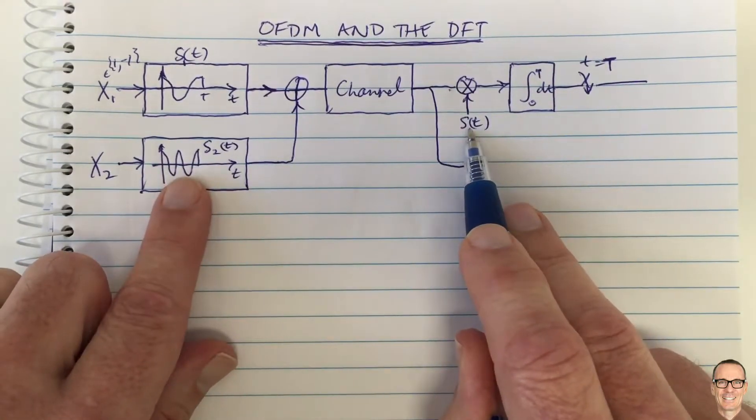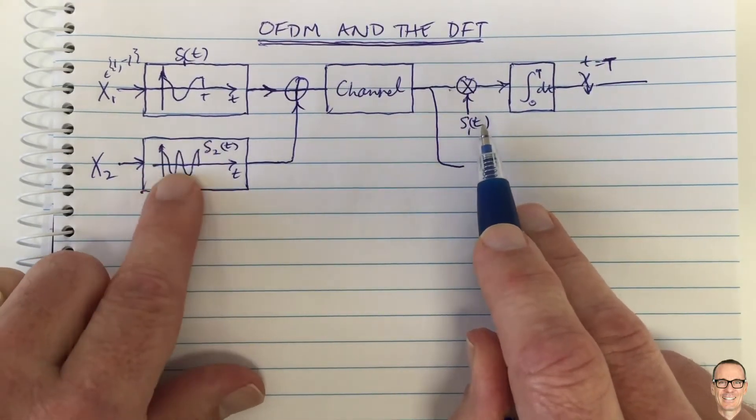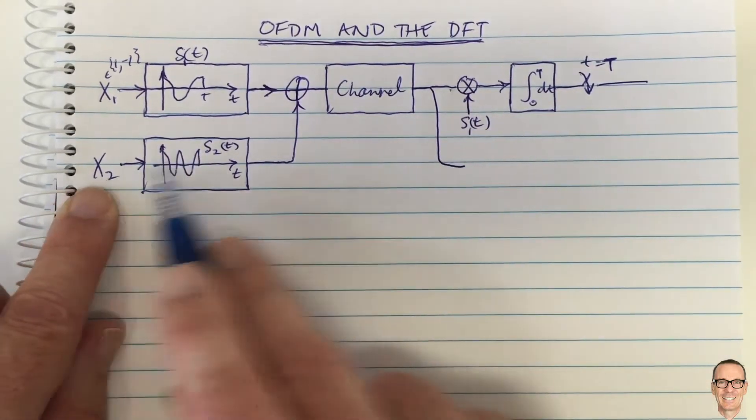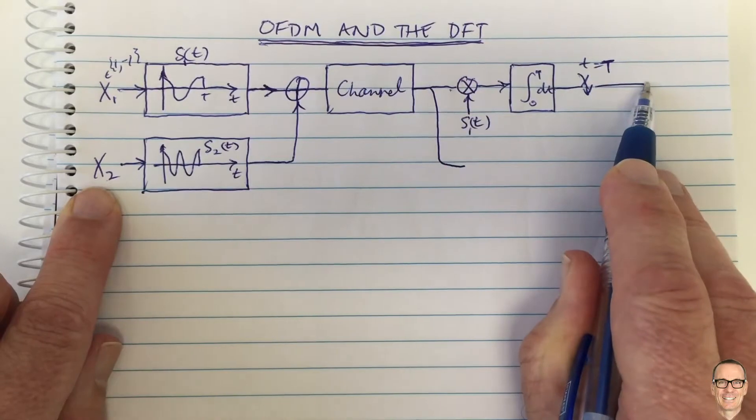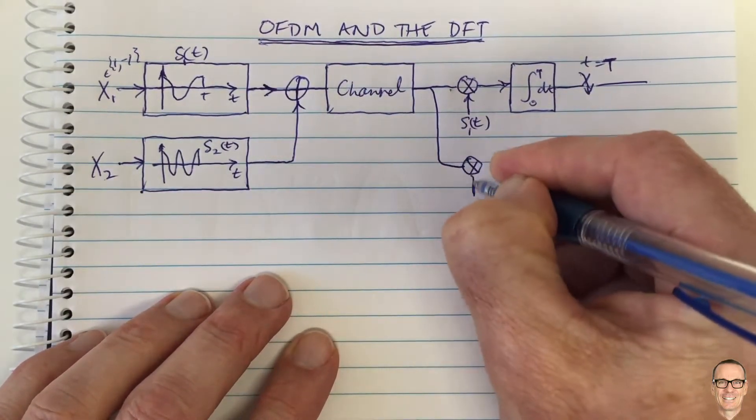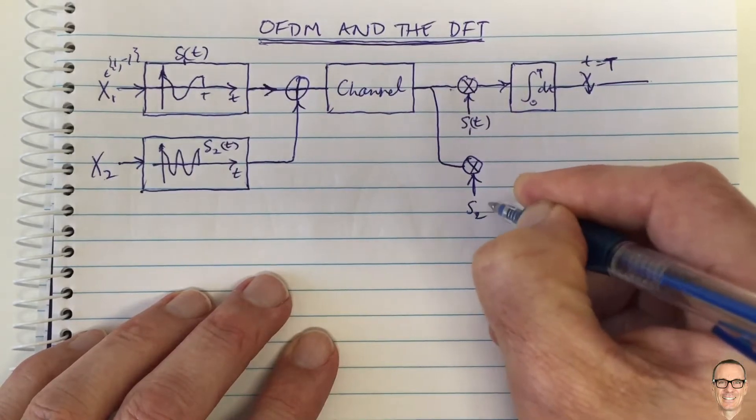Because these two signals are orthogonal to each other, when they multiply together and go through this integrator, the effect of x2 will not be seen at the output over here. Likewise, this one here is multiplying by s2(t).